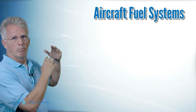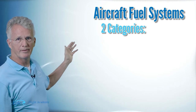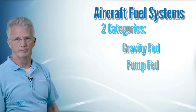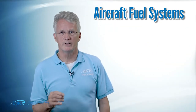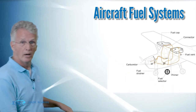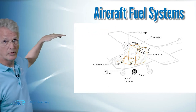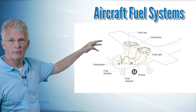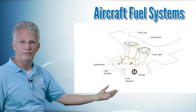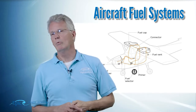Now let's look at aircraft fuel systems. We divide them broadly into two categories: gravity fed and pump fed. Gravity-fed systems, like the one on your 172, have tanks up high in the wings — it's a high-wing airplane — and the fuel is fed by gravity down into the fuel system.